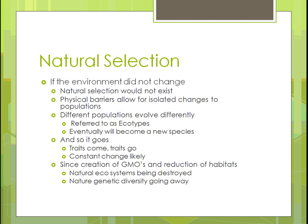If the environment didn't change, natural selection wouldn't exist. Physical barriers that allow for isolated changes to populations — because that environment didn't change — are why separate evolution occurs. Different populations will evolve differently based on their ecotypes, and eventually could become a new species if isolated long enough from the other. In that changing environment, some traits will be lost and some gained, in a constant change that's always occurring.